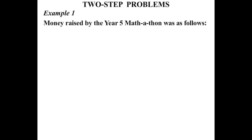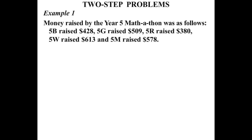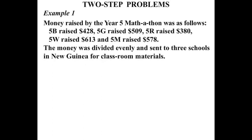In this lesson we take a look at two-step problems. Example one: money raised by the Year 5 mathathon was as follows — 5B raised $428, 5G raised $509, 5R raised $380, 5W raised $613, and 5M raised $578. The money was divided evenly and sent to three schools in New Guinea for classroom materials. The question is: how much was sent to each school?